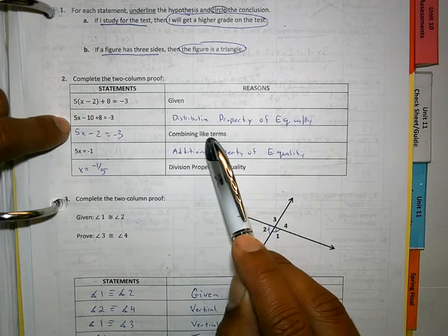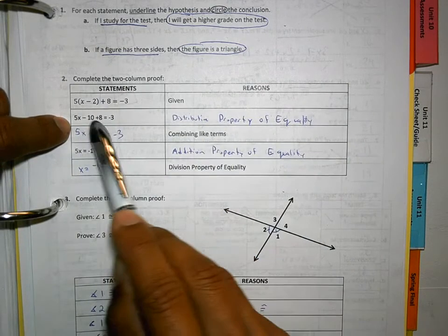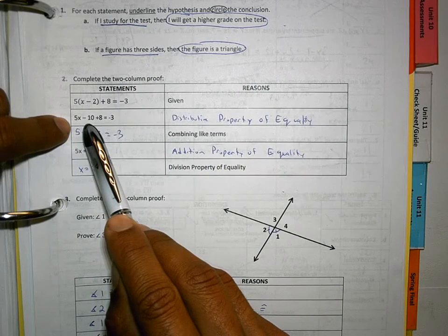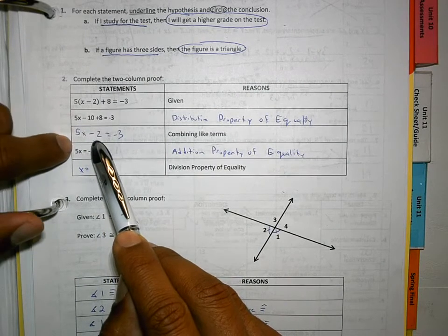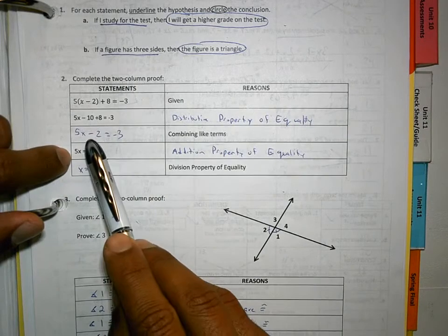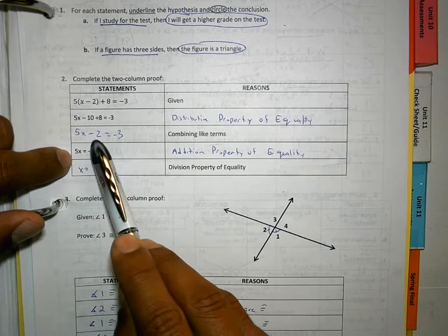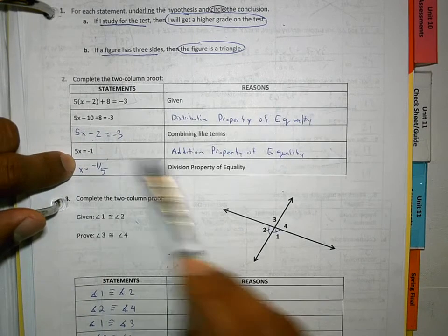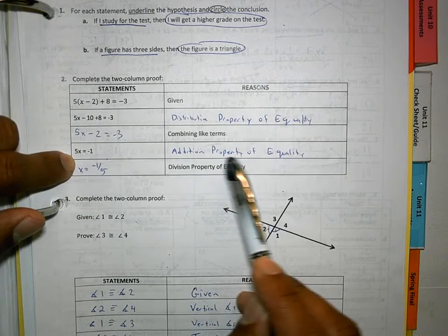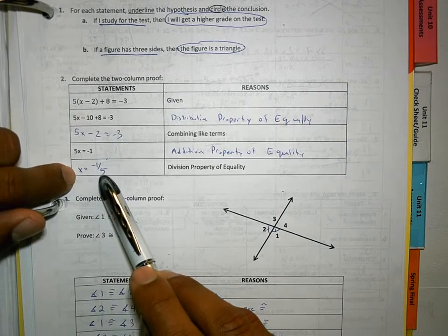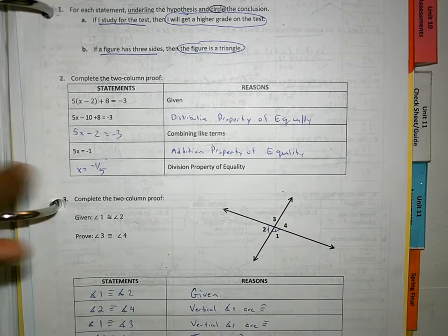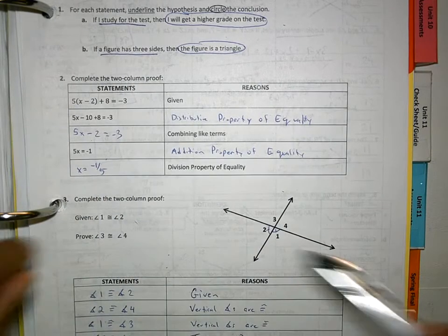And then, if it says combining like terms, I have to decide how can I combine like terms. I must put the negative 10 and the 8 together and get negative 2. Then, when they add 2 to both sides and get the negative 1, they use the addition property of equality. And then, they divide it by 5 and got x is equal to negative 1 over 5. This is what you're trying to prove.